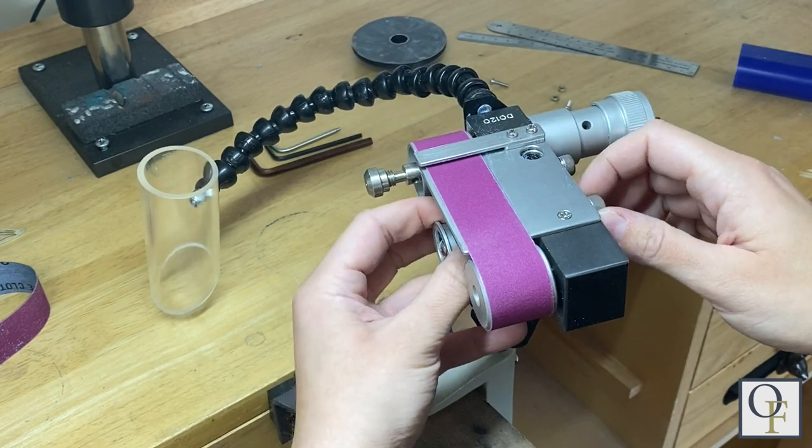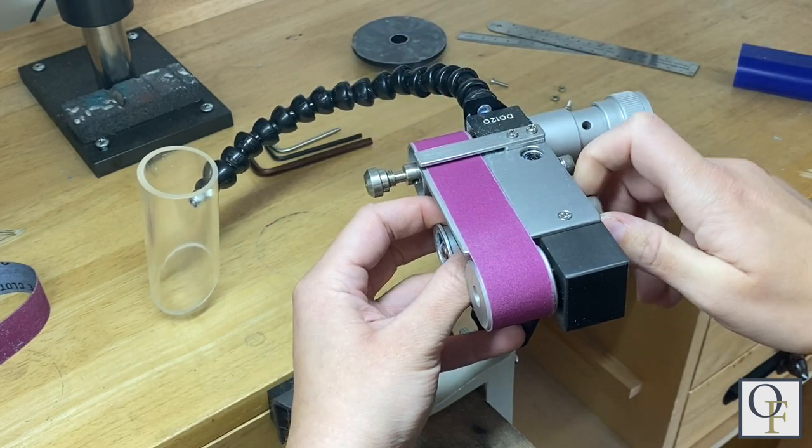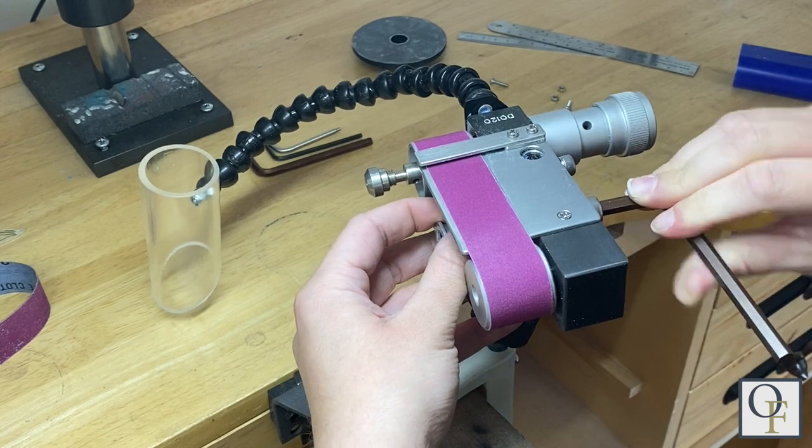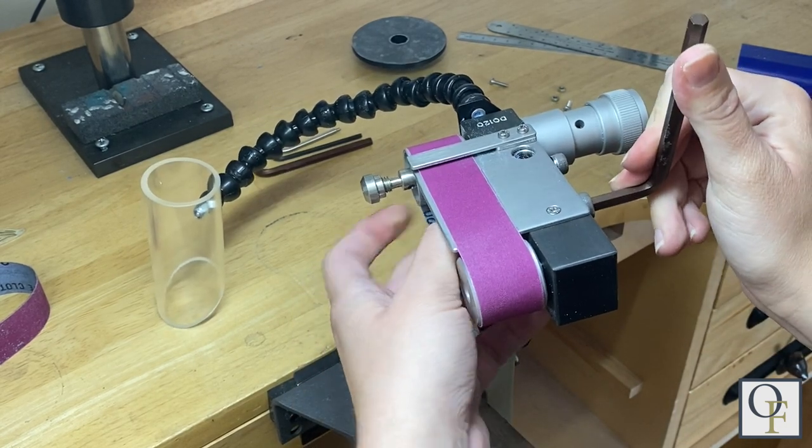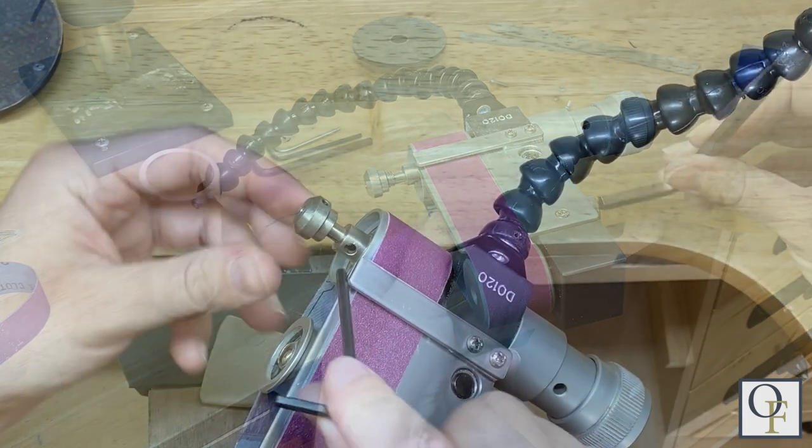Now we're ready to tighten that middle screw and when I do this I'm putting a little bit of pressure on that center spool to keep the belt tight. Finish by tightening with the hex key provided in the kit.